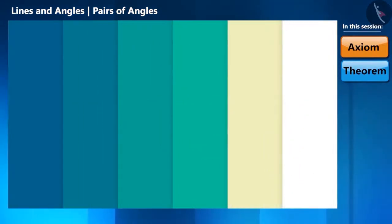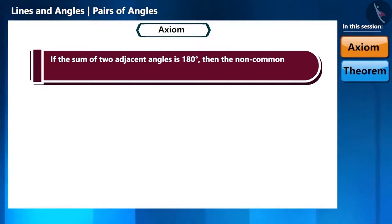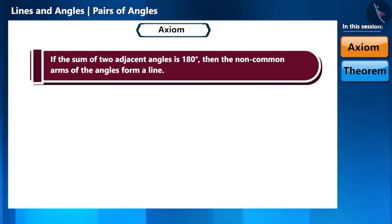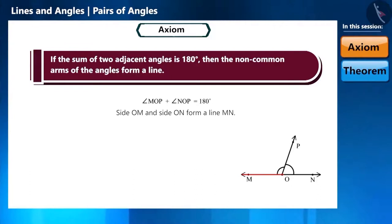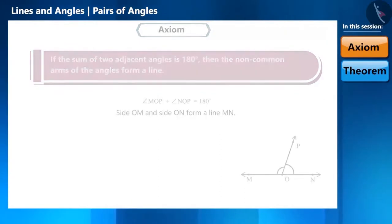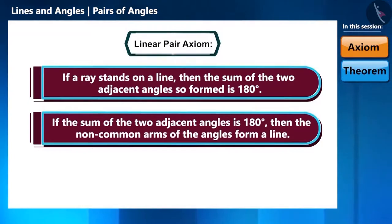Let's move on to the next axiom. If the sum of the two adjacent angles is 180 degrees, then the non-common arms of the angles form a line — that is, the sides which are not the common sides of these angles form a line. Friends, the two axioms that we learnt together are called the linear pair axioms.